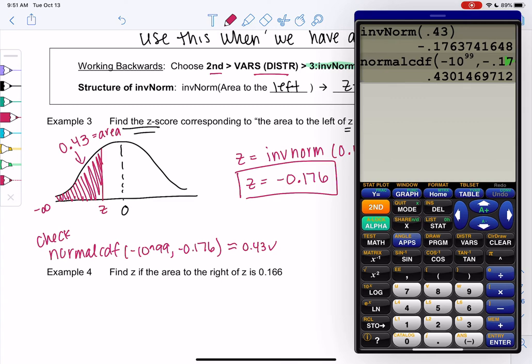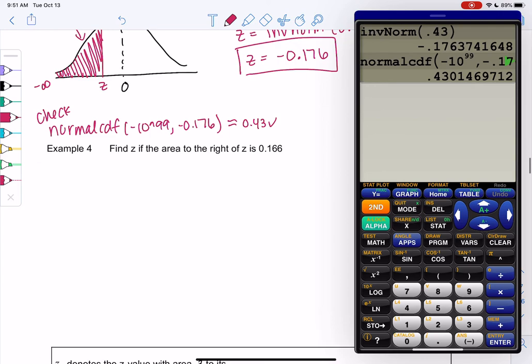Let's try example four. We want to find the z-score if area to the right is 0.166. So now it's telling us the right side area. And I'm only going to shade a little bit because it's only 0.166. So halfway is about 50. So it's less than halfway.